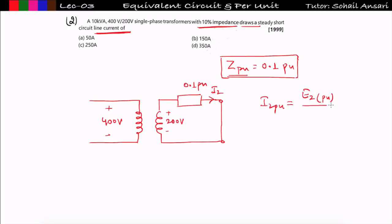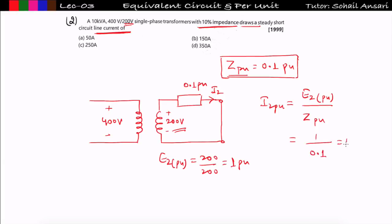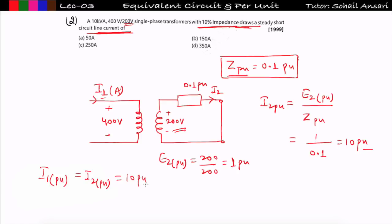Draw the transformer with Z_PU represented on the secondary side as 0.1 per unit. Primary voltage is 400V and secondary is 200V. Short circuiting the secondary terminal, we find I₂ in per unit: E₂ in per unit = 200/200 = 1 per unit. So I₂ per unit = 1 / 0.1 = 10 per unit. Since per unit parameters are equal in primary and secondary, I₁ per unit also equals 10 per unit.